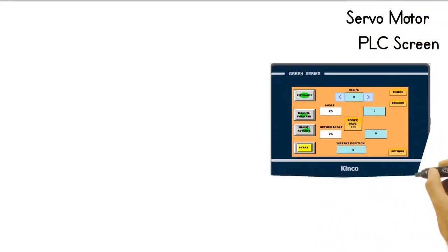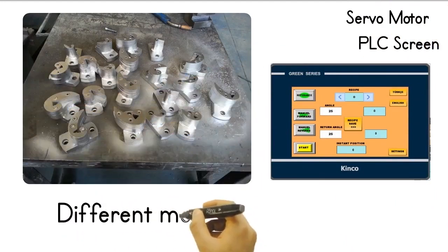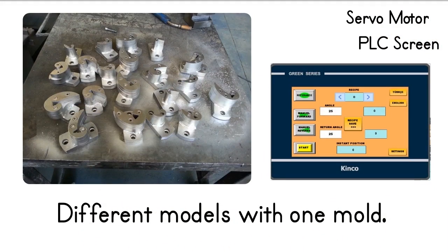Since the machine is controlled by both switch, PLC screen and programmable servo motor, it can be easily adjusted and can make very precise bending. Thus, you can make different twists with the same mold without changing the mold.